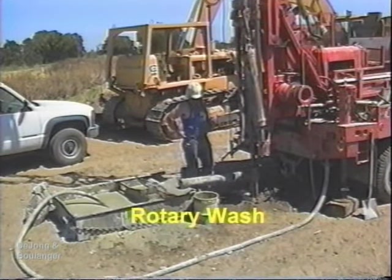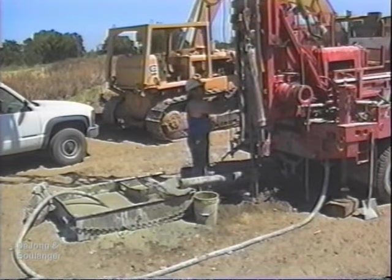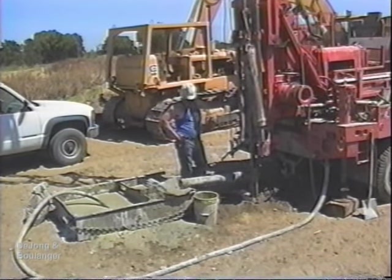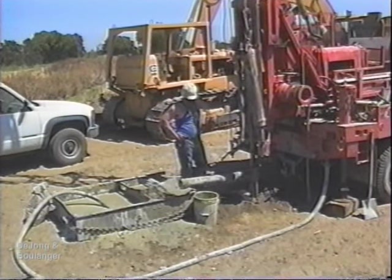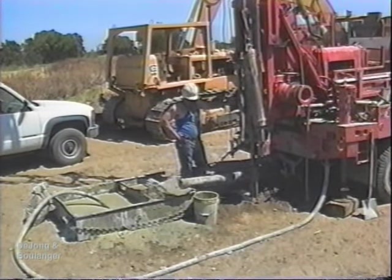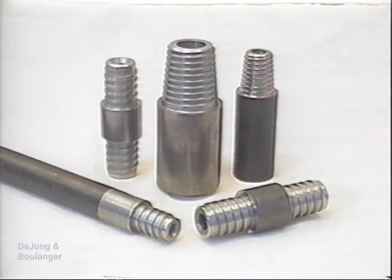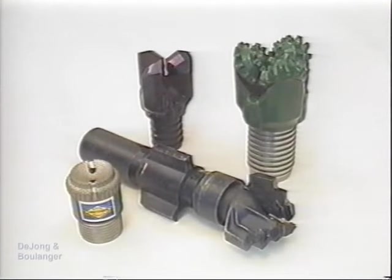Mud rotary, or rotary wash drilling, is very different from the continuous flight auger methods. The underlying principle is that mud, a mixture of water and bentonite, circulates through the borehole, bringing the soil cuttings to the surface and supporting the sides of the borehole. For drilling, a bit is connected to a series of drill rods that are attached to the drill head. Drill rods typically have an outside diameter of one and five-sixteenths inches to three and a half inches. Common rotary bits include drag bits, roller bits, and plug bits.